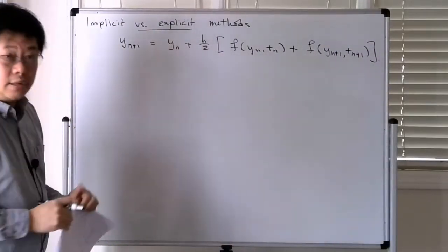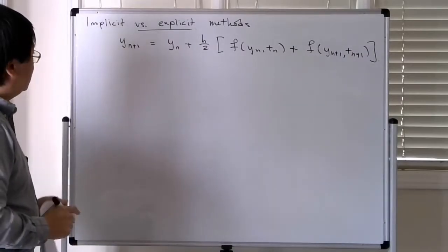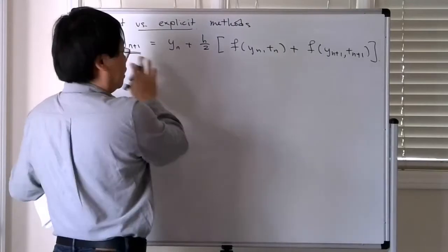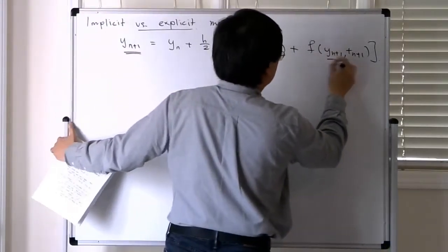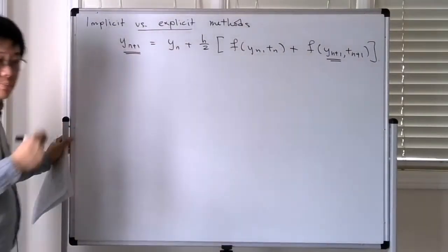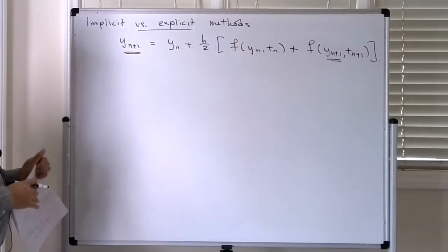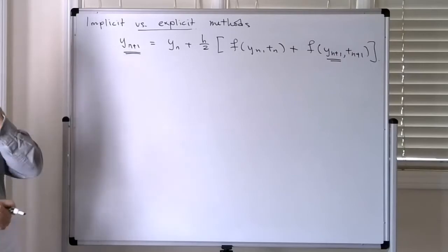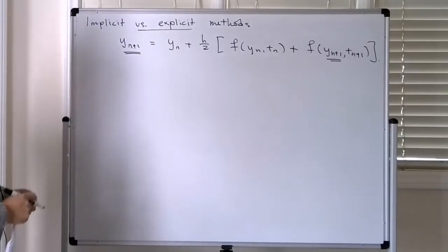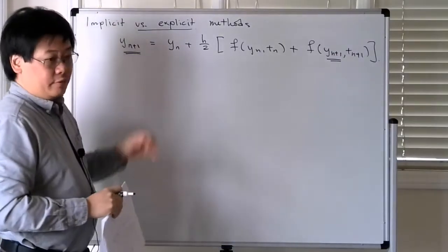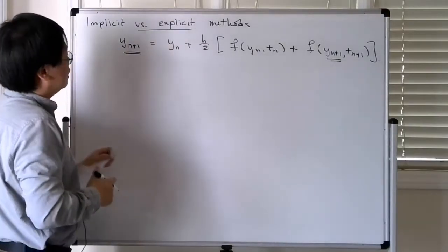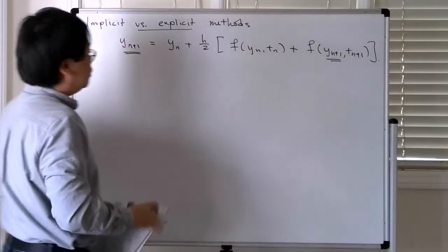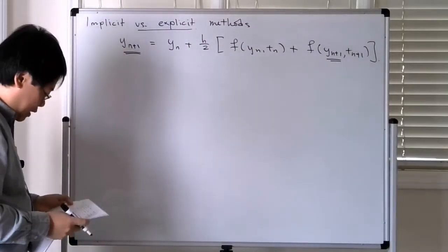This is an example of an implicit method because the unknown y_{n+1} shows up on both the left-hand side and the right-hand side. In principle, you have to solve this nonlinear equation in order to compute y at the new time. In contrast, if the method was explicit, the right-hand side would only depend on things you already know and so you could explicitly evaluate it.